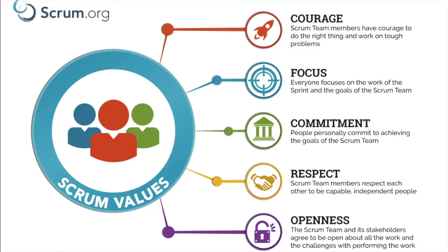The third value is commitment. People personally commit to achieving the goals of the Scrum team. Whatever sprint goals are defined, each member of the development team commits to what they are going to deliver — for example, the user stories they will complete and the tasks they will do as part of those user stories, finished within the defined timeline.